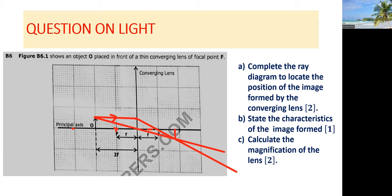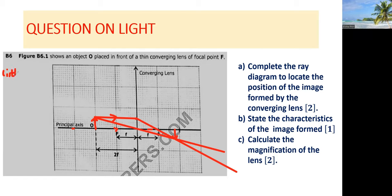We can now see the image and bring out its characteristics. The first characteristic is that the image is upside down — it is inverted — while the object is upright.